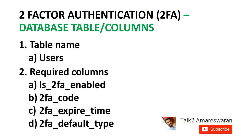The 2FA_expired_time column is used to track when the 2FA code will expire. I am going to store an epoch time value in the 2FA_expired_time column. The 2FA_default_type column stores the user's default preference — for example, whether the user wants to receive the 2FA code by mail or by SMS.